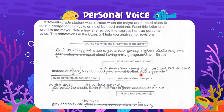Next sentence: 'Adults seem to appreciate the shade.' Again, very formal and a little awkward in the way it's worded. Better would be, 'adults sit and talk or read or just enjoy the shade.' Then, 'Savin Street Park is green and beautiful in our gray and noisy city.' Does that sound like something a seventh grader would say? Not so much. Better would be, 'it's a tiny patch of green in our gray and noisy city,' which describes the park a little bit more.